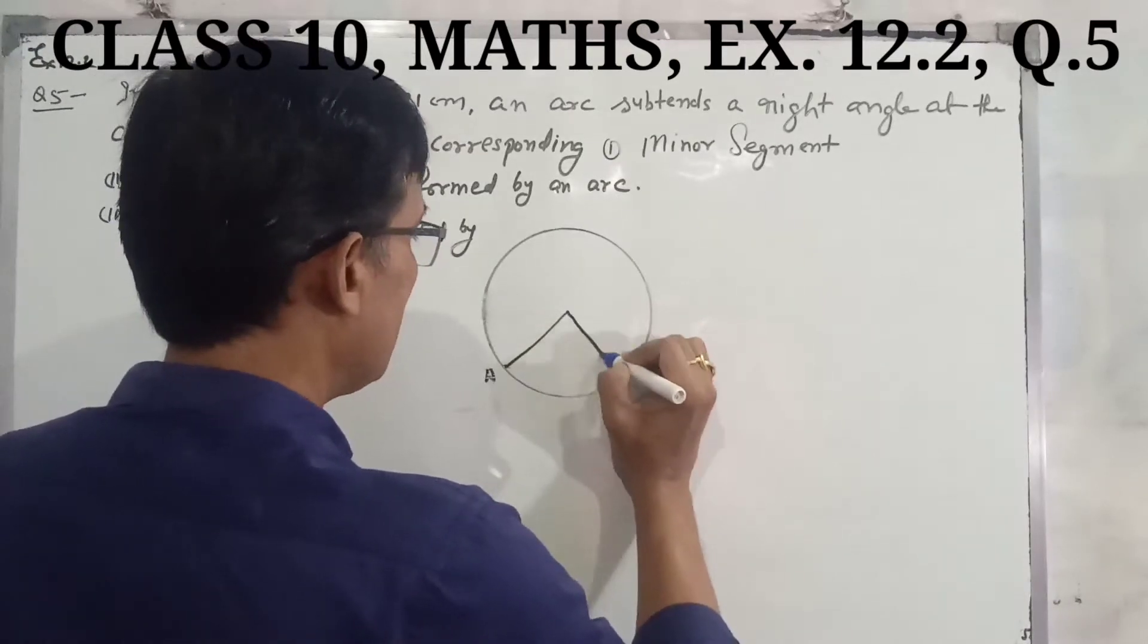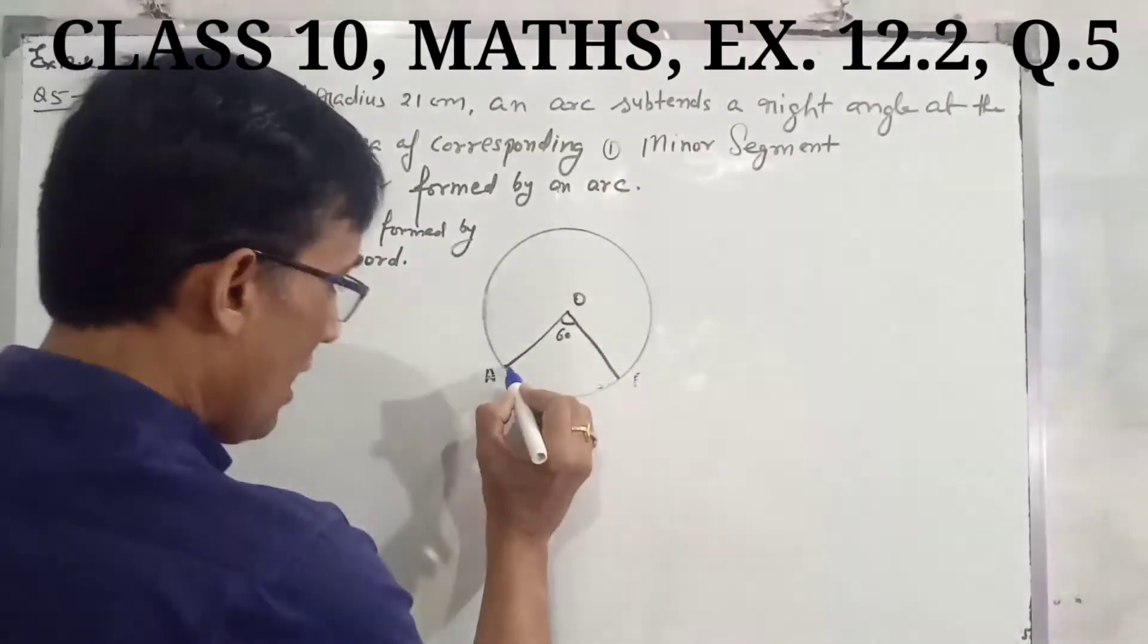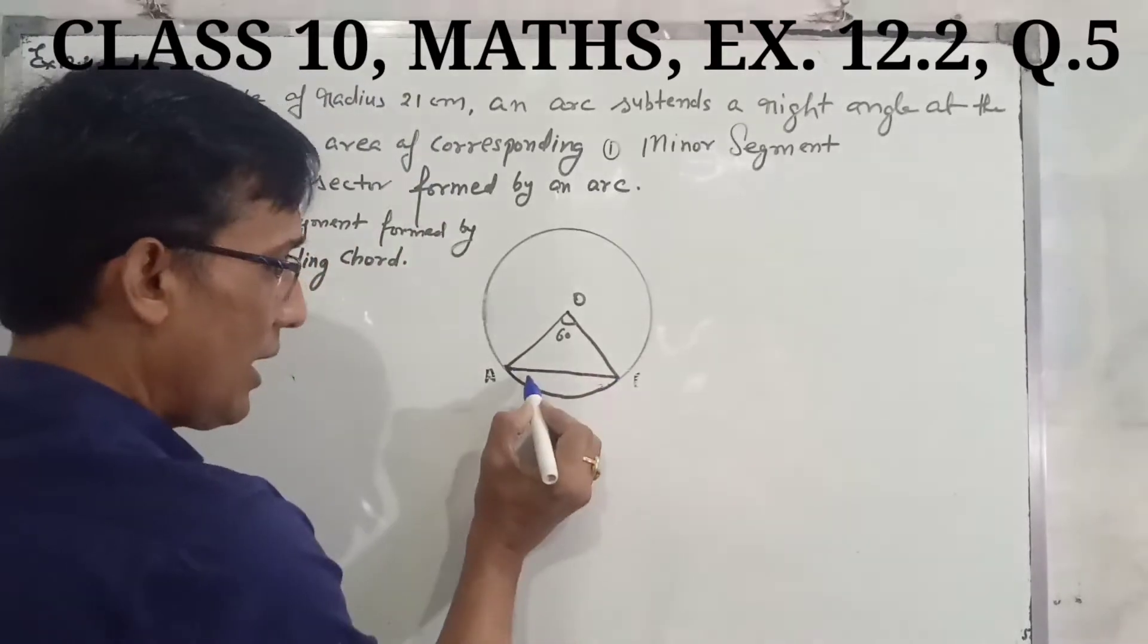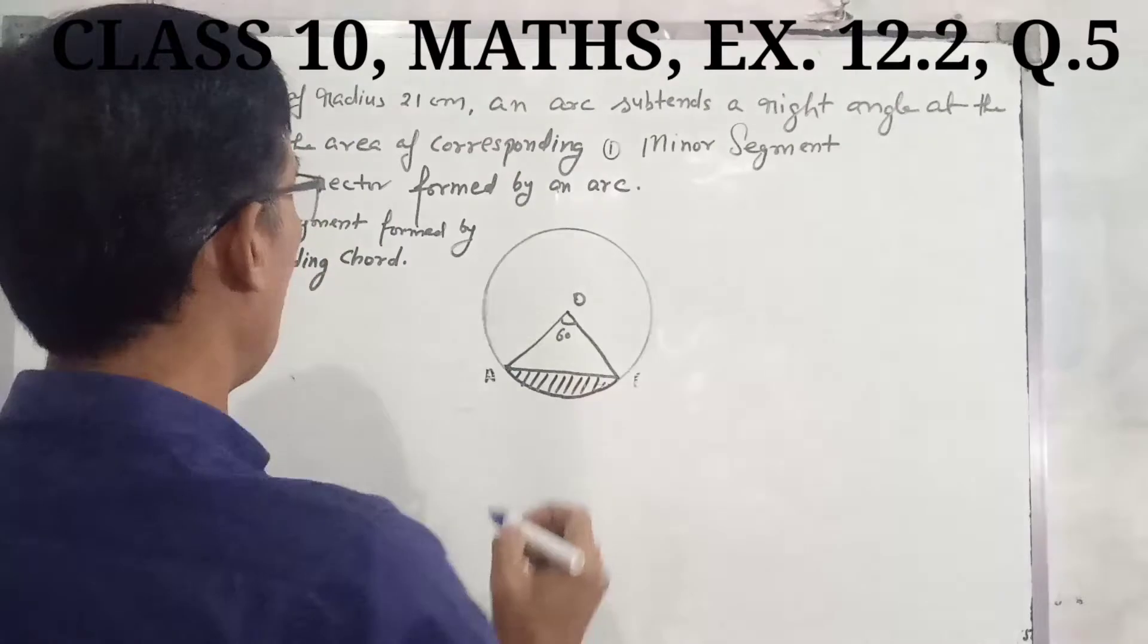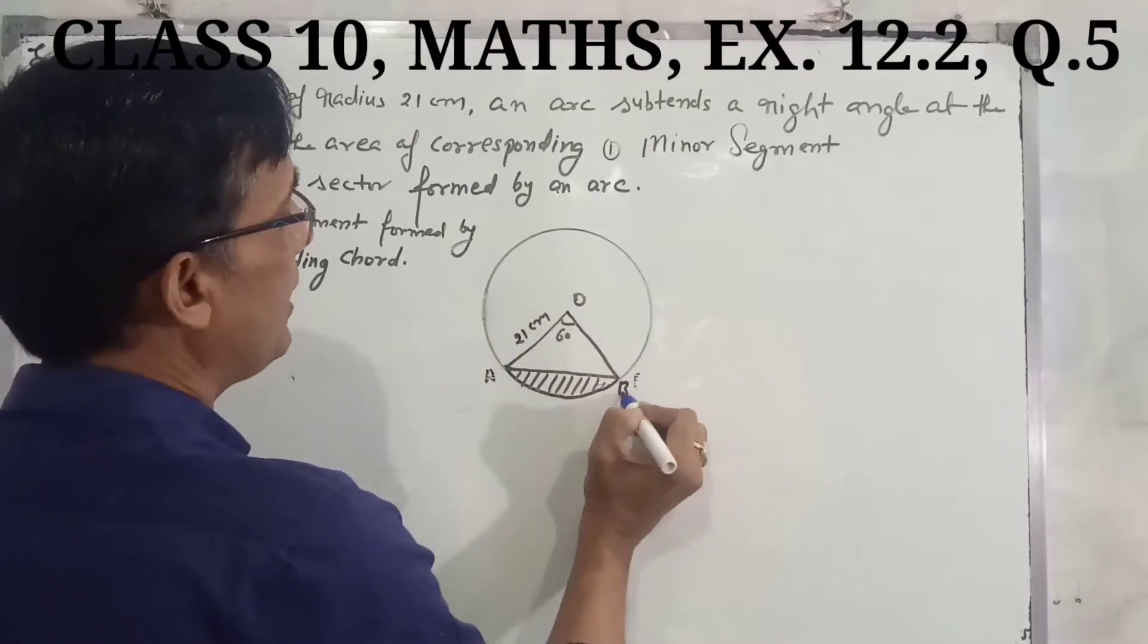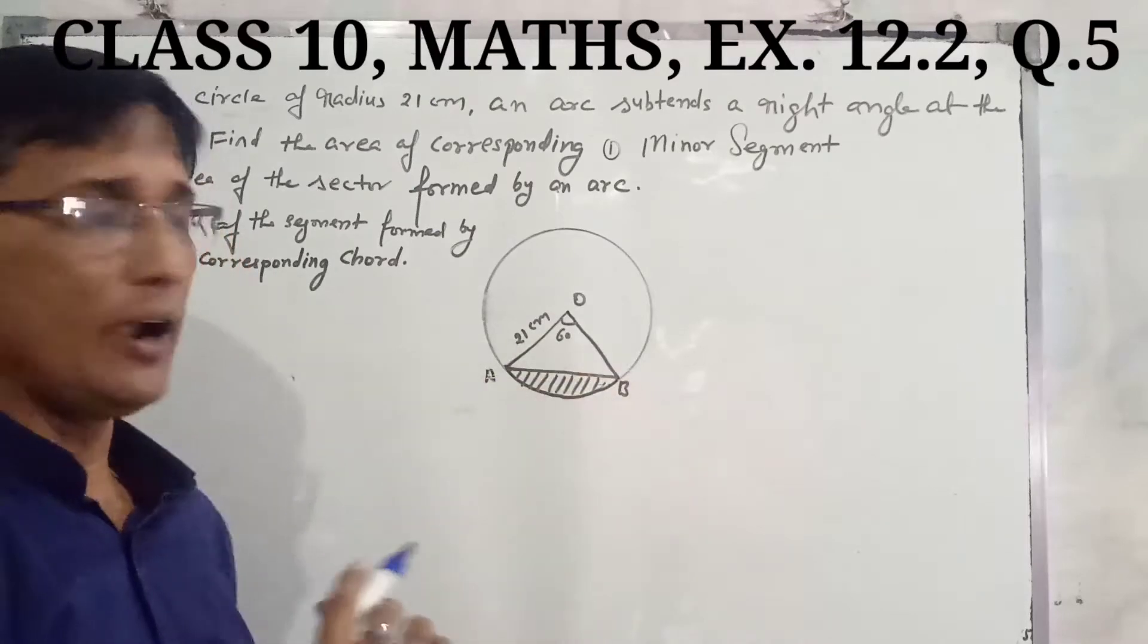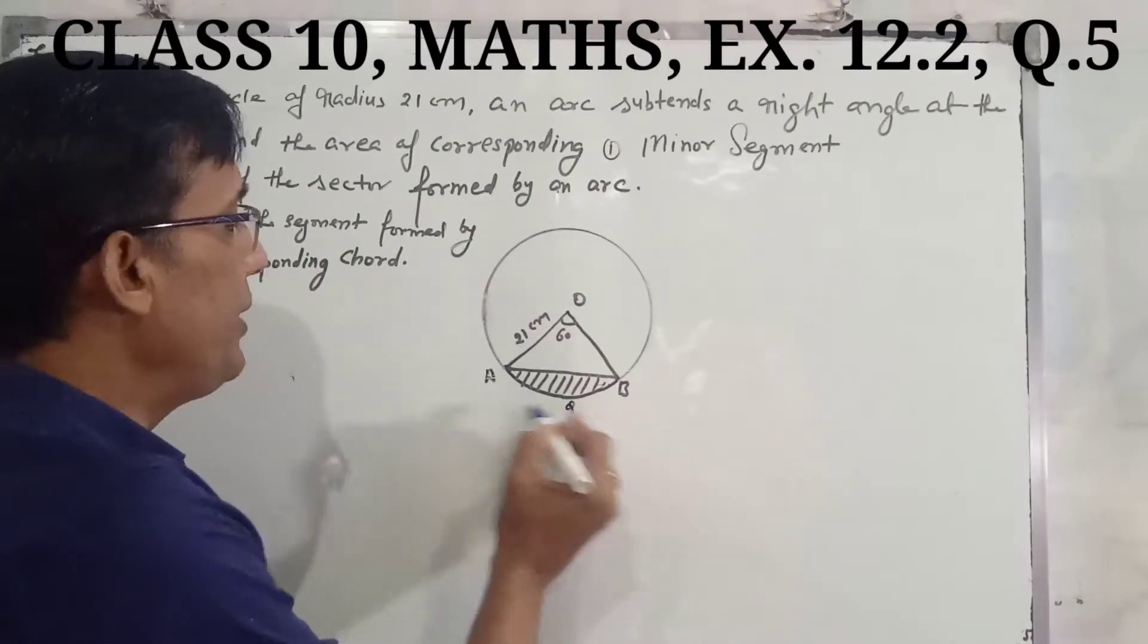Here we have a circle with radius 21 cm and theta is 60 degrees. The circle has an arc, the endpoints are connected by a chord, and this shaded portion is the minor segment. The radius is 21 centimeters, with chord AB and radii AO and BO.